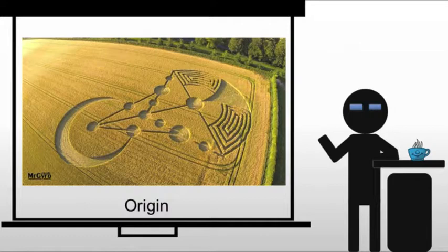For example, crop circles are something that develops in the 1970s and 80s with two guys in England creating these and eventually creating pieces that the world thinks are alien — at least until 1991 or so, when the guys come out and say, yeah, we're making these, and here's how. Incidentally, they use string and 2x4s to create the entire image.